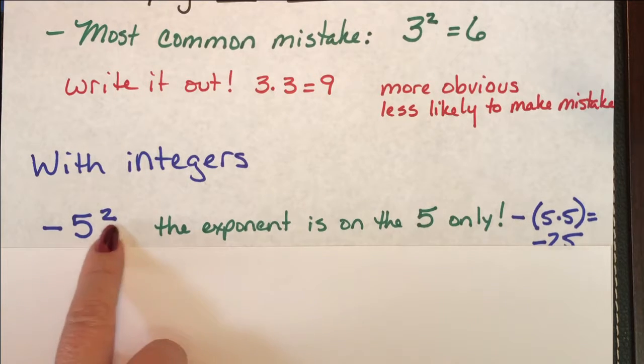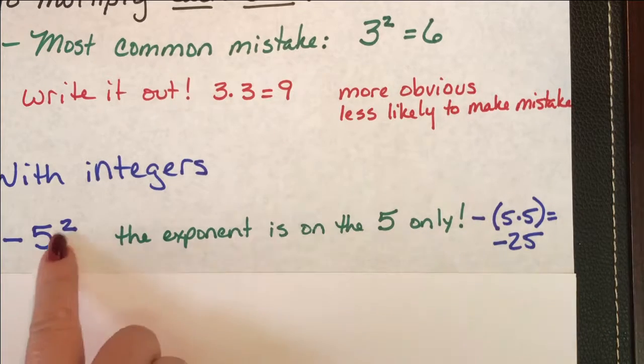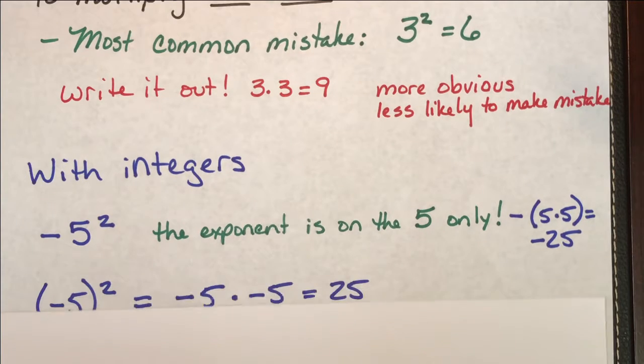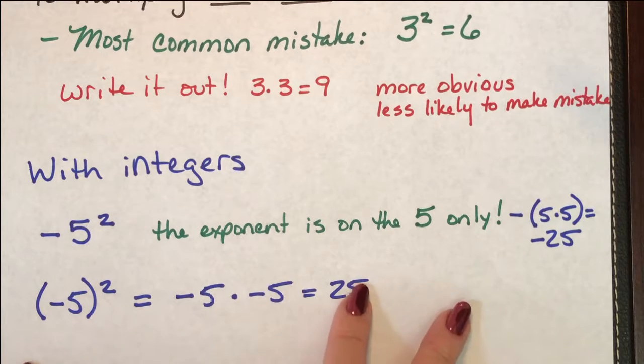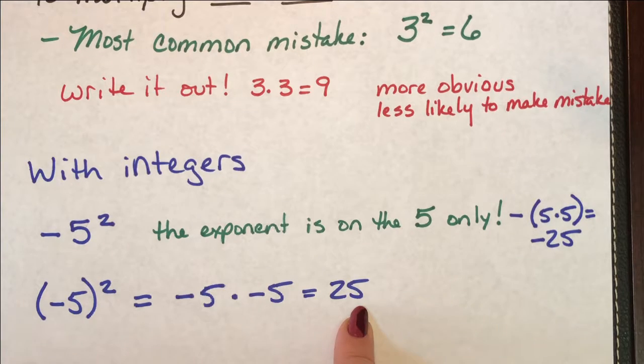There's also a common problem with integers. If you just say negative 5 squared, this exponent is only connected to this 5. What this is really saying is negative 5 times 5, which is negative 25. If you want to make sure that that negative gets carried through, you need to put parentheses about the whole thing. This says negative 5 squared, which is negative 5 times negative 5, and that gives me an answer of positive 25.